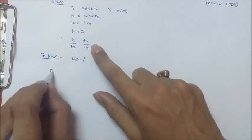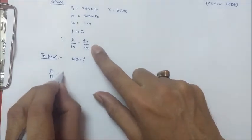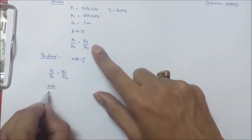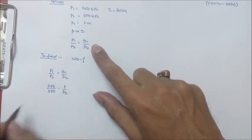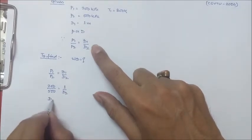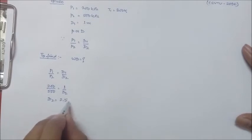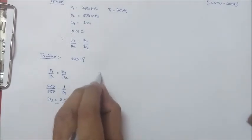So P₁/P₂ is equal to D₁/D₂. P₁ is 200 kilopascal by 500 kilopascal is equal to 1 by D₂. So D₂ is equal to 2.5 meter. We got this.